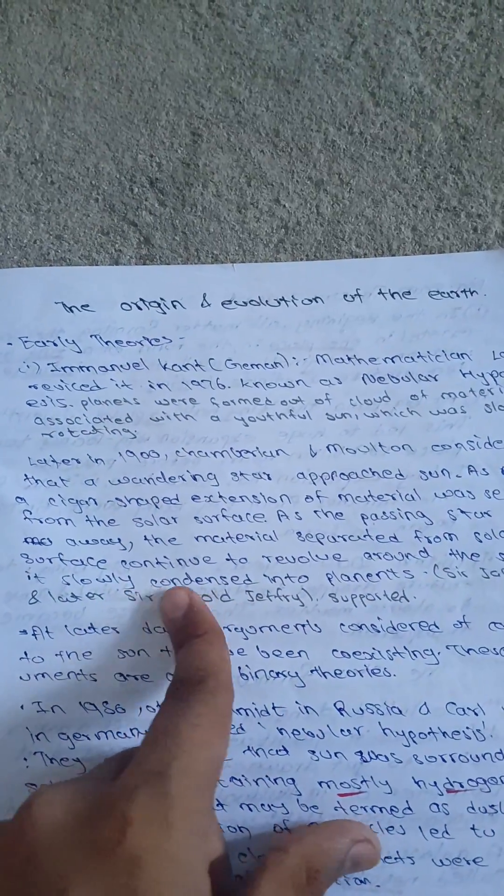Then, in 1950, Otto Schmidt in Russia and Carl Weizsäcker in Germany revised the Nebular Hypothesis. They considered that the Sun was surrounded by a solar nebula containing mostly hydrogen and helium along with what may be termed as dust.